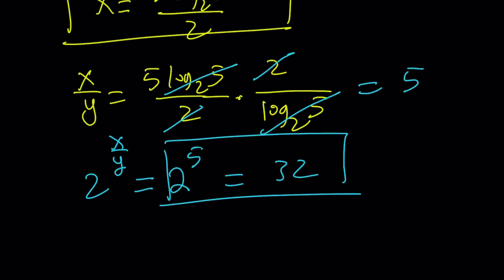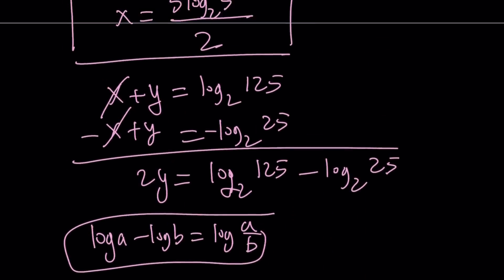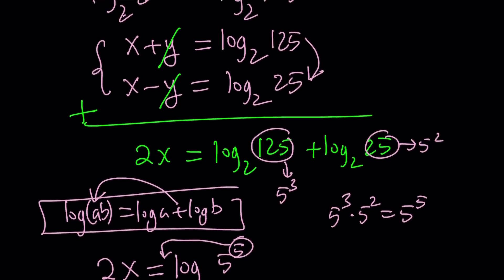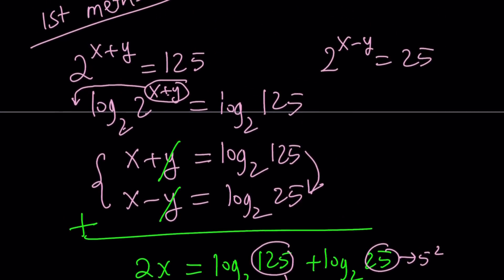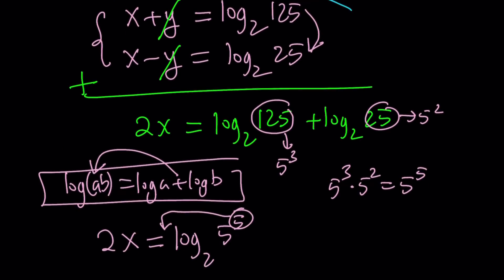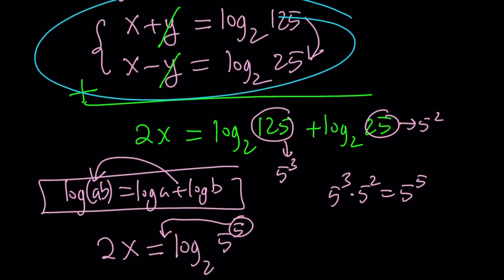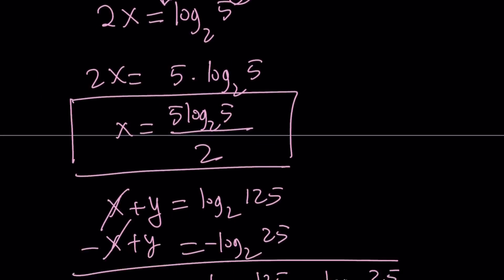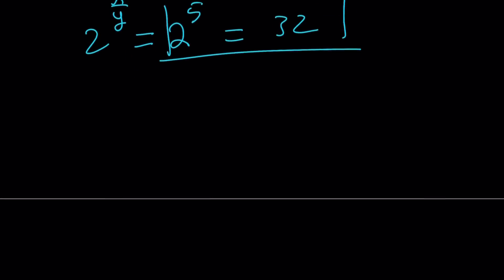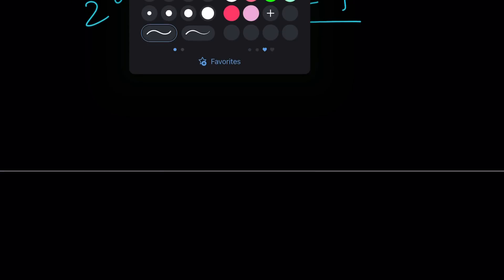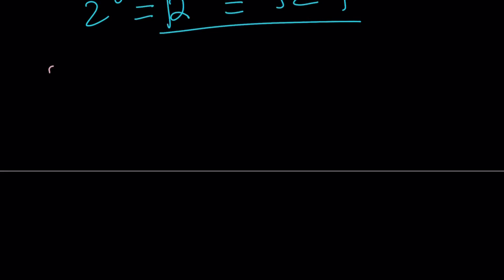Make sense? I hope it does. So quickly, let me recap what I did. I basically wrote the log equivalencies, wrote both equations in terms of logs, and then I came up with a system, and then I solved that system by elimination using properties of logs along the way. Let's talk about the second method, which I'm hoping you'll find simpler.